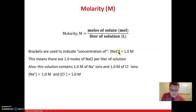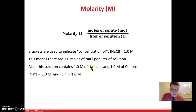We put something in brackets to indicate it's a concentration. So the concentration of NaCl is 1.0 molar, meaning 1.0 moles per one liter of solution. And if you have 1.0 mole of sodium chloride, it's going to give you 1.0 molar concentration of Na⁺ ions and 1.0 molar concentration of Cl⁻ ions — that's 1.0 mole of each ion per liter of solution.